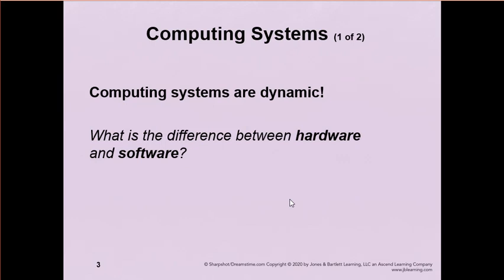So one of the things we'll be talking about here at first is about hardware and software. Computer systems are dynamic — that just means that they are sort of in constant motion. You have users who are doing things with the computer, and then the computer is doing things to provide information back to the user. So there's this interplay between hardware and software and the user that's going on all the time.